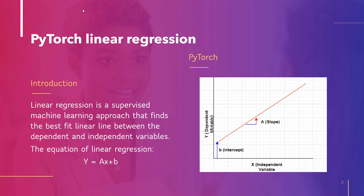Linear regression is a supervised machine learning approach that finds the best fit linear line between the dependent and independent variables. It also finds the linear relationship between them. The equation of linear regression is y = ax + b, where y is the dependent variable, x is the independent variable, b is the intercept, and a is the slope, or coefficient of slope.